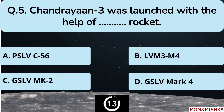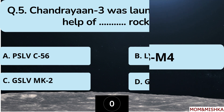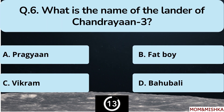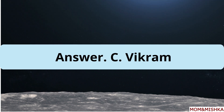Chandrayaan-3 was launched with the help of which rocket? The answer is LVM3-M4. What is the name of the lander of Chandrayaan-3? The correct answer is option C: Vikram.